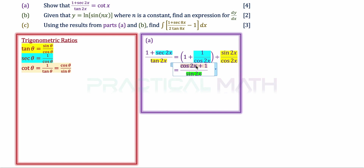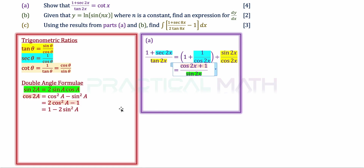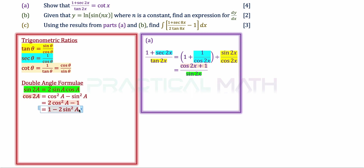We now have a double angle of 2x in both numerator and denominator. Going back to the double angle formulas: sin 2a equals 2 sin a cos a. For cos 2a there are three formulas: cosine squared a minus sin squared a; 2 cosine squared a minus 1; and 1 minus 2 sin squared a. We want to decide which one to apply. Since cosine 2x has multiple formulas, we first convert the denominator sin 2x — there is only one formula, giving 2 sin x cos x.